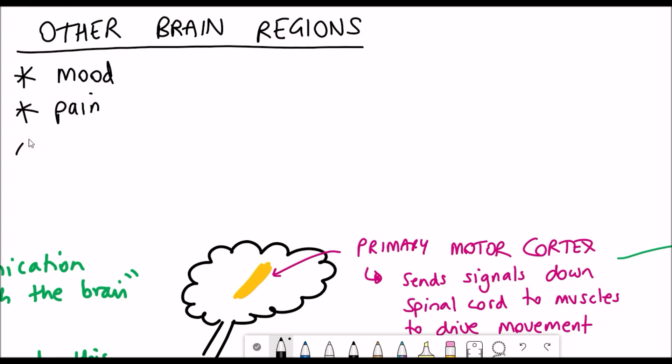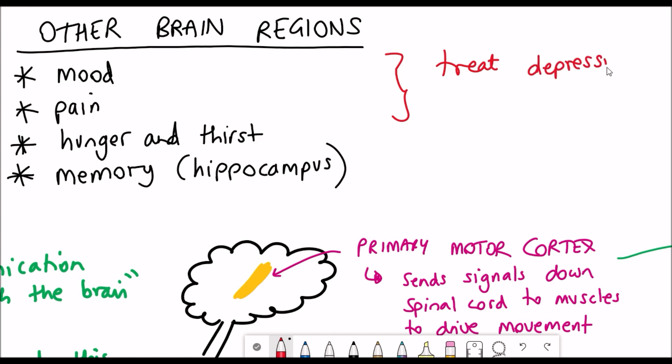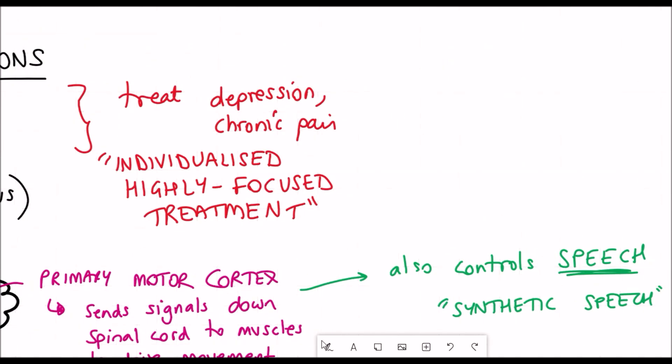Then there's other brain regions beyond that such as regions involved in regulating mood, pain, hunger, memory such as the hippocampus which in theory could also be targeted and used to treat other diseases such as Parkinson's, epilepsy, depression and chronic pain. Neuralink envisions a future where we could see individualized highly focused treatments.